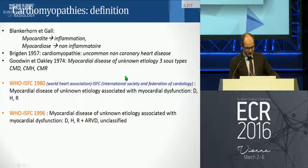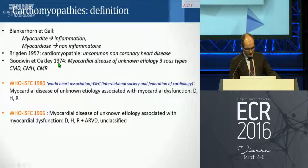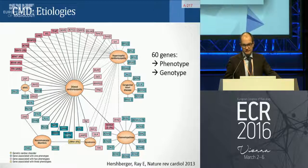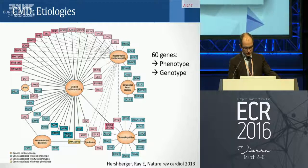They defined three subtypes based on the phenotype: dilated, hypertrophic, and restrictive. From 1974 to 1996, the definition did not change a lot. But a lot of progress has been made specifically on the genetic characterization of those diseases, and that picture showed that it is really complicated.